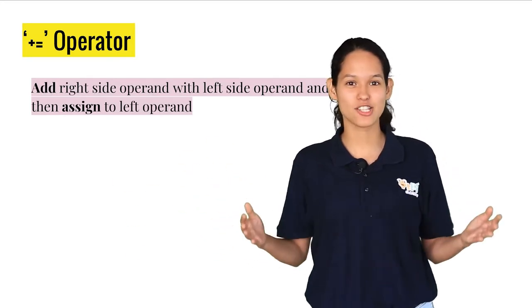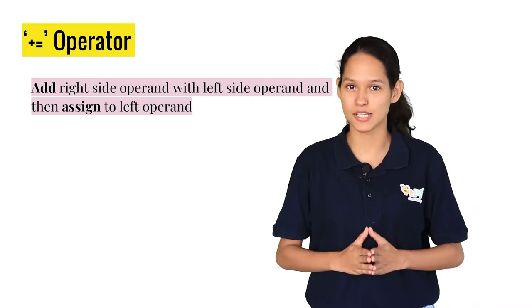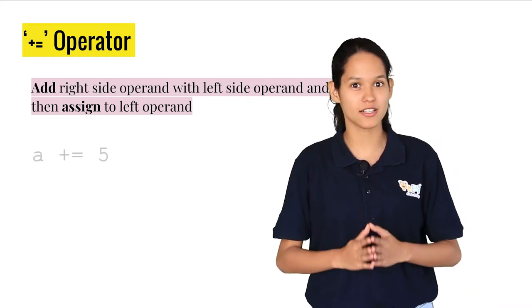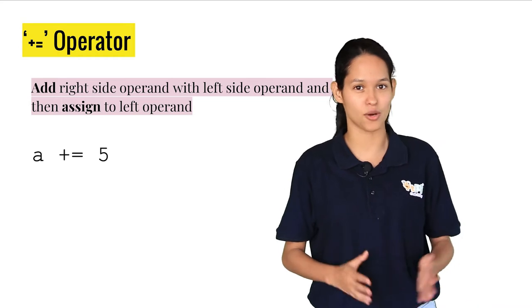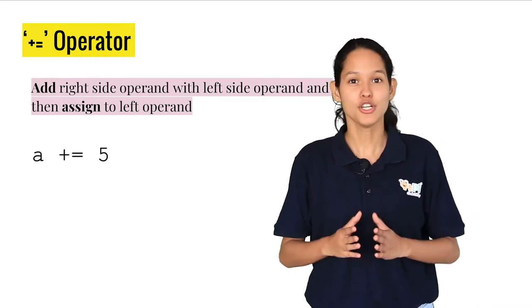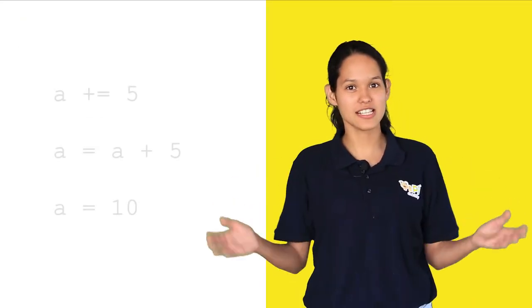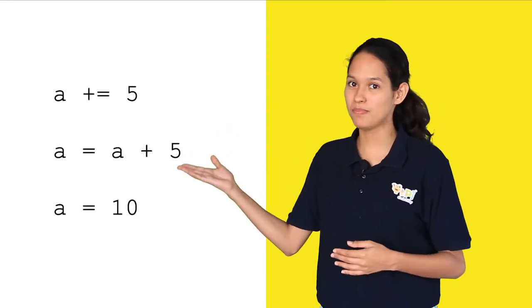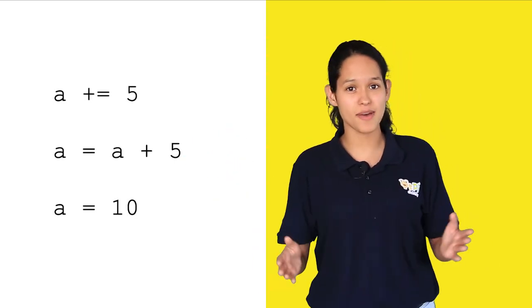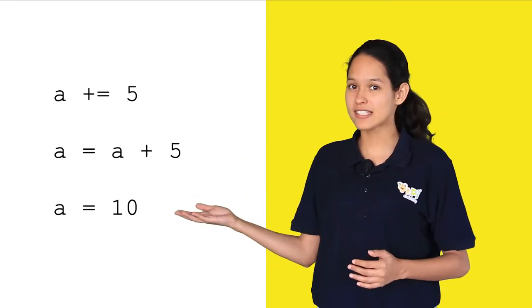The next operator we use is the plus equal to operator. It performs addition of the right hand side operand to the left hand side operand and assigns the value to the left hand side operand. The value a plus equals to 5 is the same as a equals a plus 5. Hence, the value 10 is assigned to the variable a.